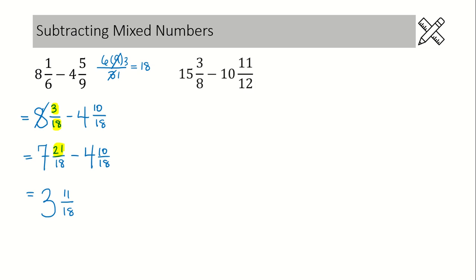Let's try that again. Here's a new question — we have denominators of 8 and 12. So our first step is to figure out the lowest common denominator. Once again, we rewrite this question with blank fractions — no numerators or denominators — and then figure out what is the lowest common denominator. We have an 8, and we're going to multiply that by 12.